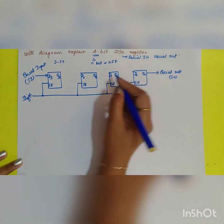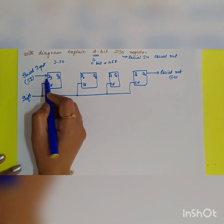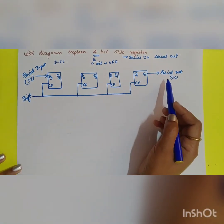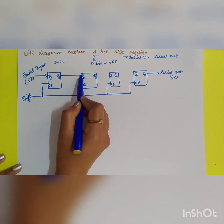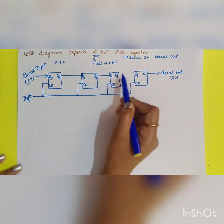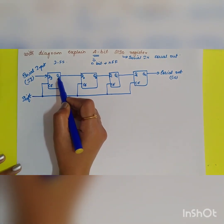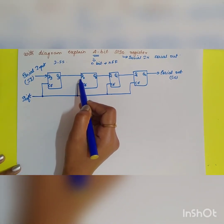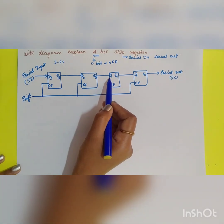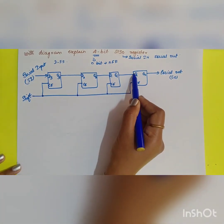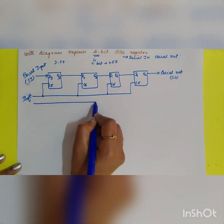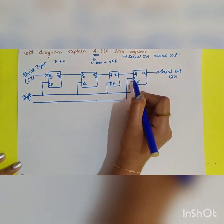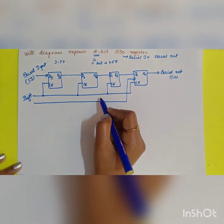Serial In means input data is sent bit by bit; similarly, output data is received bit by bit serially. The output of one flip-flop acts as the input to the next: Q3 output feeds D2, Q2 output feeds D1, and Q1 output feeds D0. The clock is positive edge triggered.